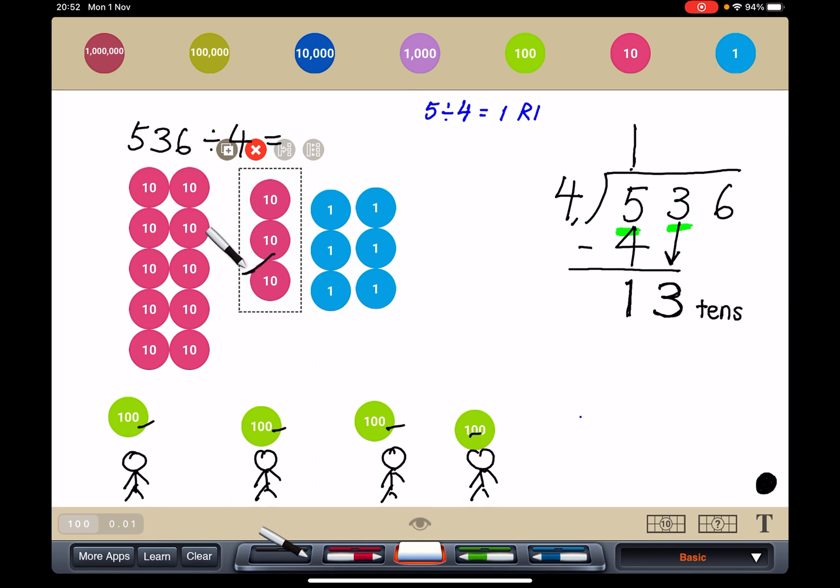So how many tens we got? Remember, 13 tens. Now, 13 divided by 4. What is the closest we can go? The closest is 3 times 4, which is 12, and then I will have remainder 1.